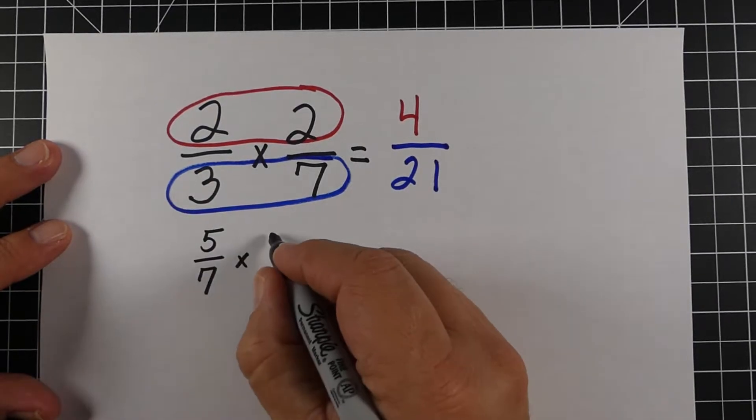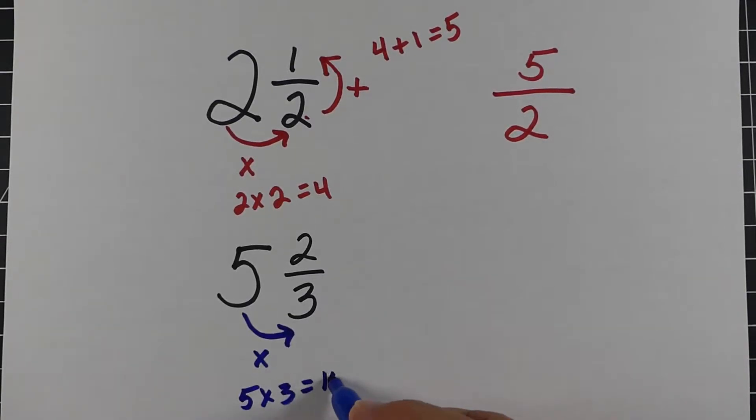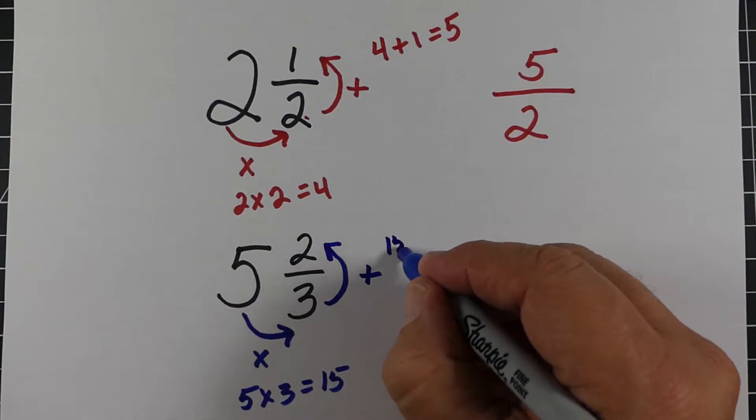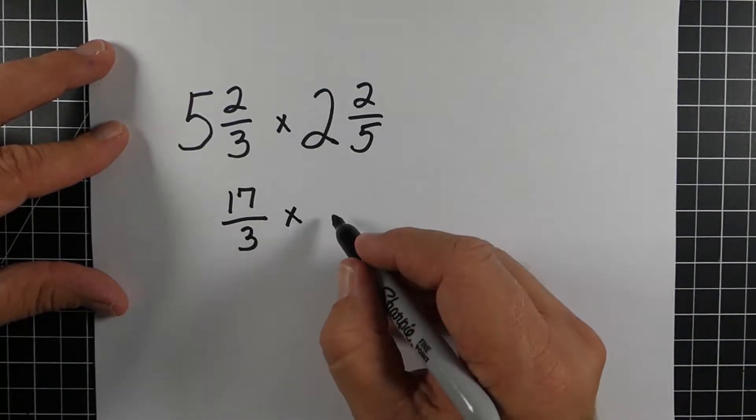There are very few things more despised in the world of middle school math than fractions. In this video, we're going to attempt to at least make part of it a little easier to understand. Hi, this is Todd from Land of Math. What we're going to do is focus on multiplying fractions and mixed numbers. We'll give you some tips and tricks, a bunch of different examples, and do a little modeling to help you make sense of all that.